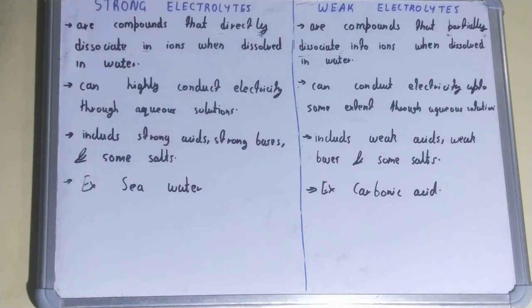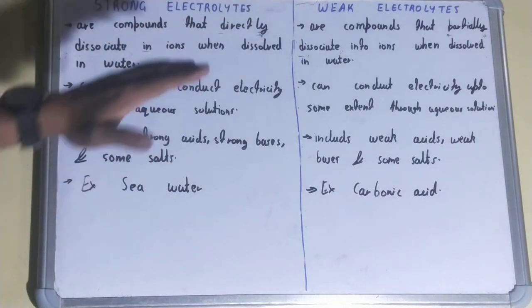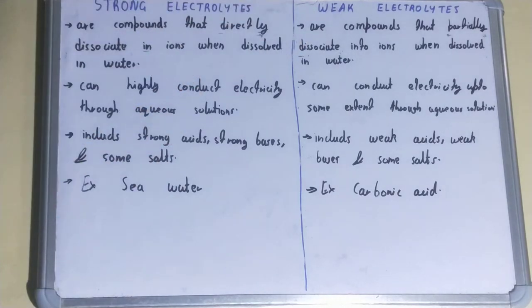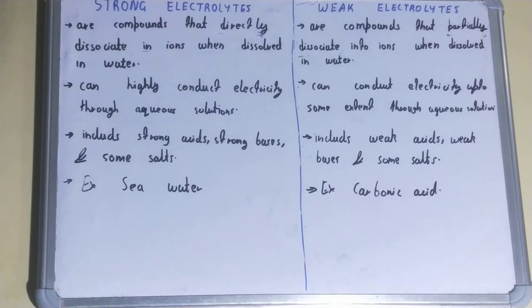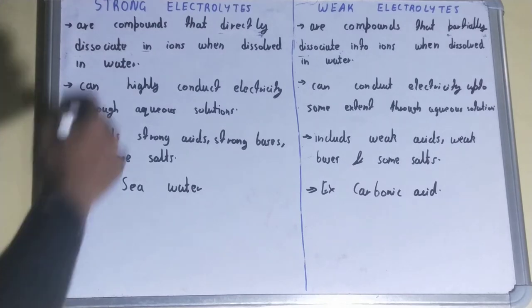If we talk about the strong electrolyte, these are the compounds that directly dissociate into ions when dissolved in water. So when you mix a strong electrolyte in water, they will completely turn into ions.